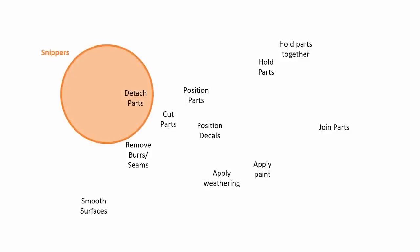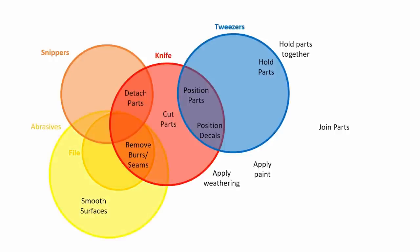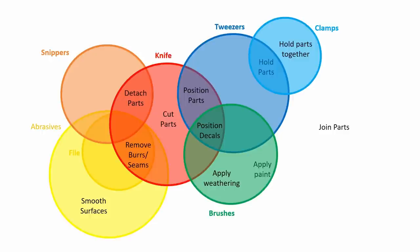Snippers, for example, are dedicated in removing parts. Files are generally only useful for removing burrs from cut parts. A modelling knife covers many activities, though how well it performs each task varies a lot. Tweezers cover several tasks as well, and some designs are better at some of these than others. Abrasives, which also include files, can remove burrs and seams, as well as general smoothing and preparation work on the model. Clamps can hold individual parts, or hold those parts together. Brushes are used for painting, but can also be used in positioning decals and applying weathering effects like washes and powders. Joining parts is the sole preserve of glue, and none of these sets contain glue so we can rule this one out.